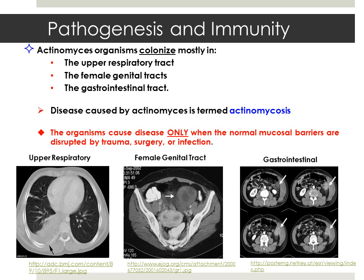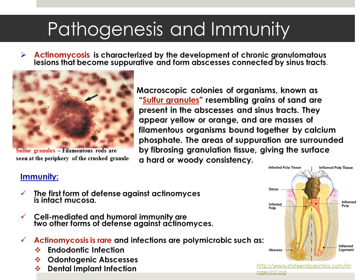These organisms colonize mostly in the upper respiratory tract, the female genital tract, and the GI tract. A CT scan can reveal the damage caused by actinomycosis. On the left, the CT slide of the upper respiratory shows a heterogeneous mass with pleural extension. In the middle, the CT slide shows pelvic actinomycosis associated with an intrauterine contraceptive device. On the right, CT findings of the gastrointestinal tract show correlation to factors contributing to bowel obstruction.